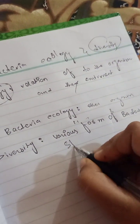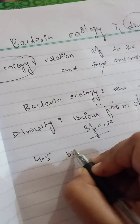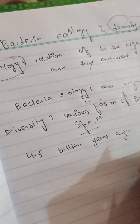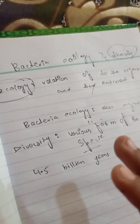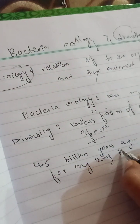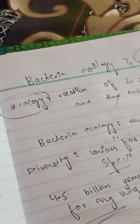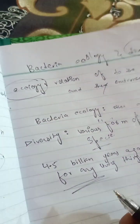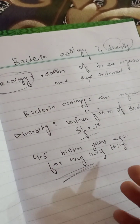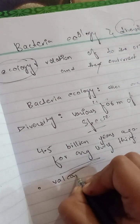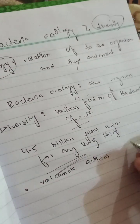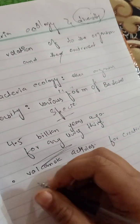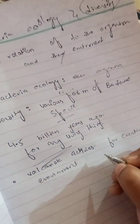Now some points about the Earth: the Earth was basically formed 4.5 billion years ago. The initial temperature of the Earth was very high, so the atmosphere was not suitable for any living thing. After some time, volcanic activities occurred, which allowed gases to be released, helping to create the environment or atmosphere.